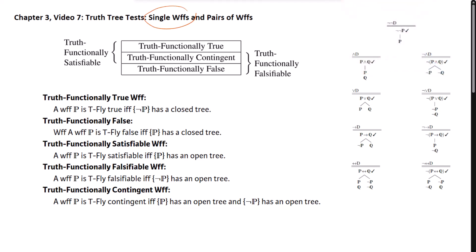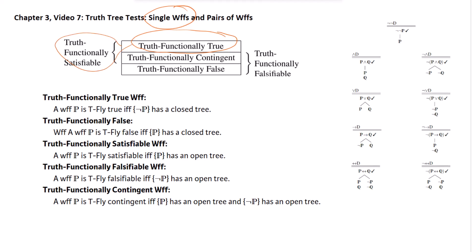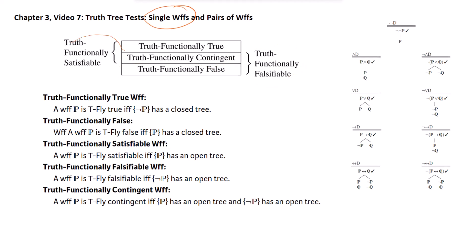If we're thinking about single formulas, single formulas can have two to three of those five properties we've been talking about. If it's true for every truth value assignment, it's going to be truth functionally true and also truth functionally satisfiable. If it's false for every truth value assignment, it's going to be truth functionally false but also truth functionally falsifiable. If it's true on some truth value assignments and false on others, then it is satisfiable, contingent, and falsifiable.